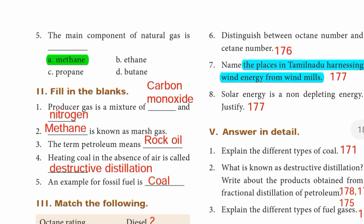Fill in the blanks: First one — producer gas is a mixture of carbon monoxide and nitrogen; answer is carbon monoxide and nitrogen. Second — dash is known as marsh gas; answer: methane. Third one — the term petroleum means rock oil; answer: rock oil.